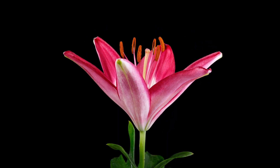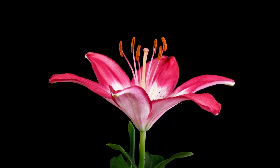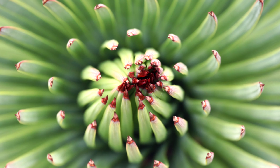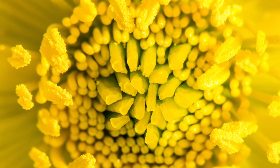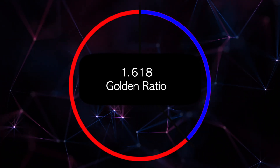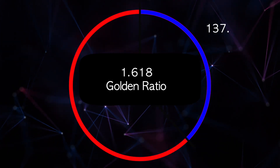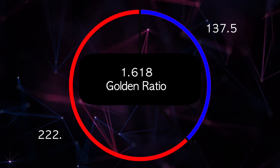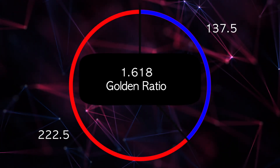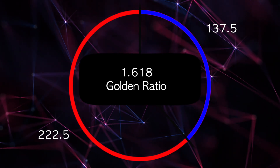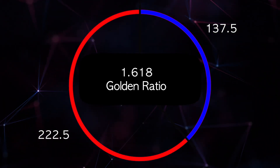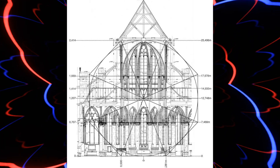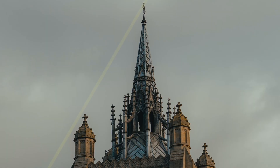Flower petals will sometimes contain the golden ratio within their 360 degrees of a circle. If we divide a circle into 137.5 degrees and 222.5 degrees, the ratio between the longer arc and the shorter arc is about the same as the golden ratio. The exact angle measuring 137 degrees is called the golden angle.